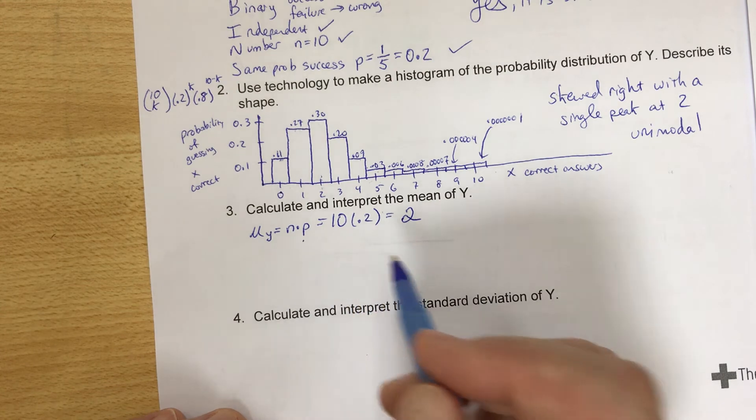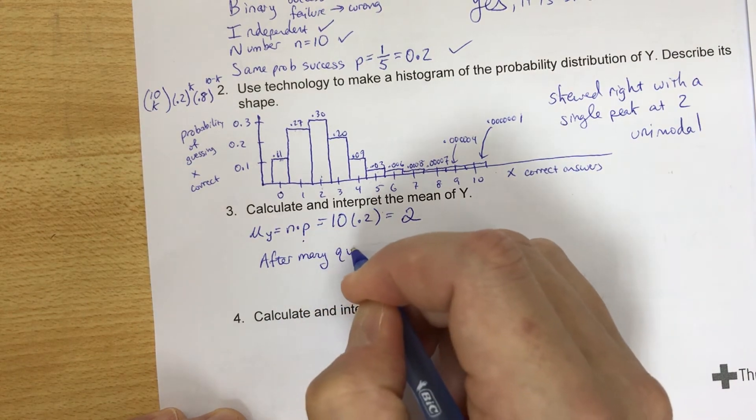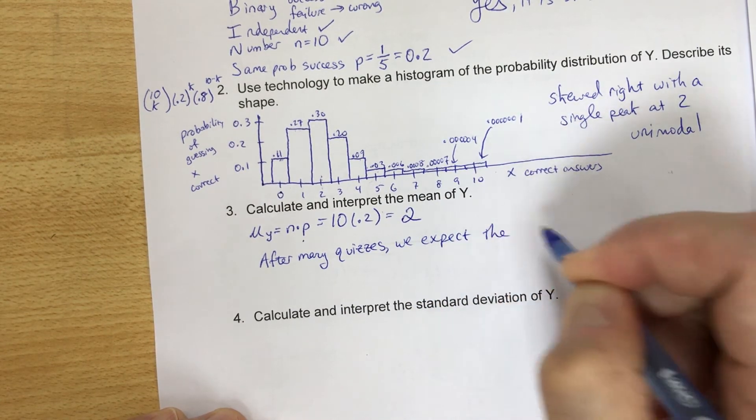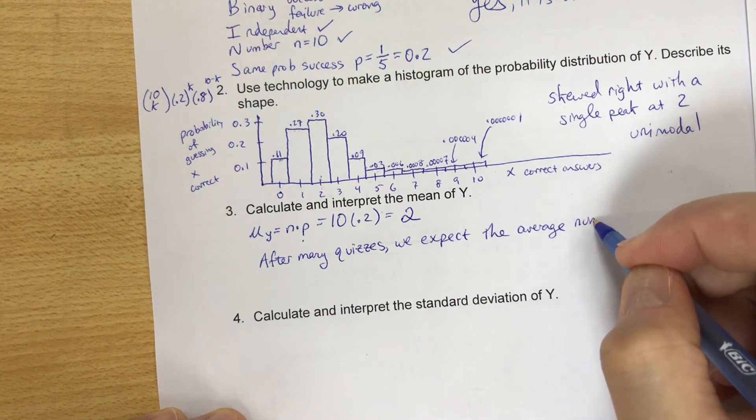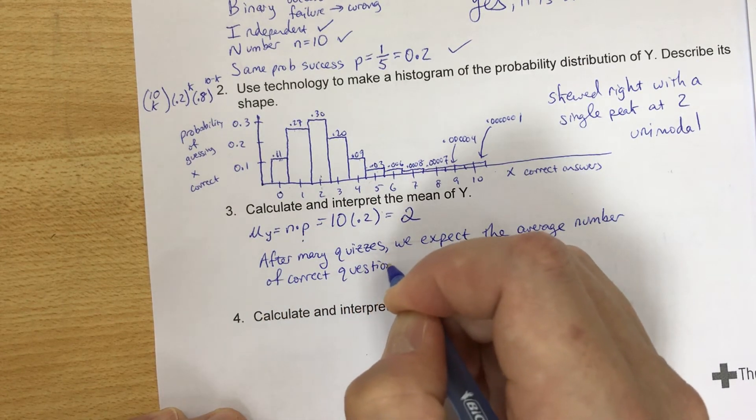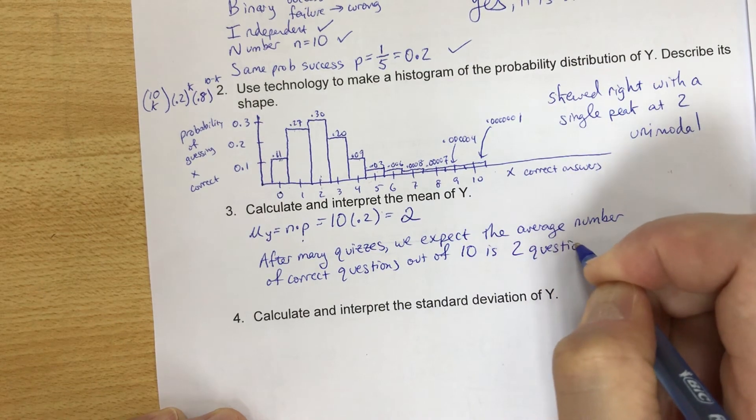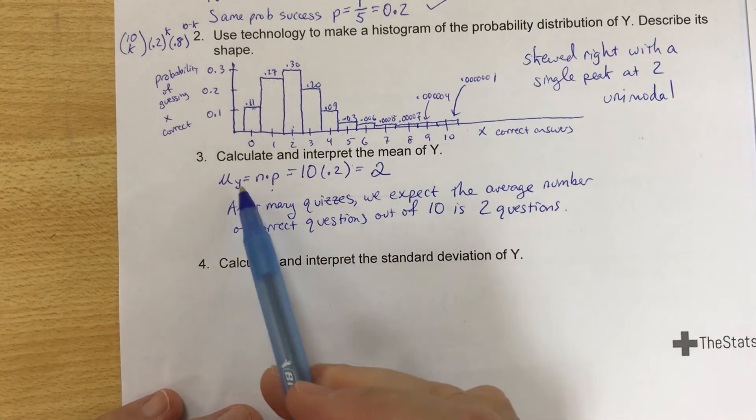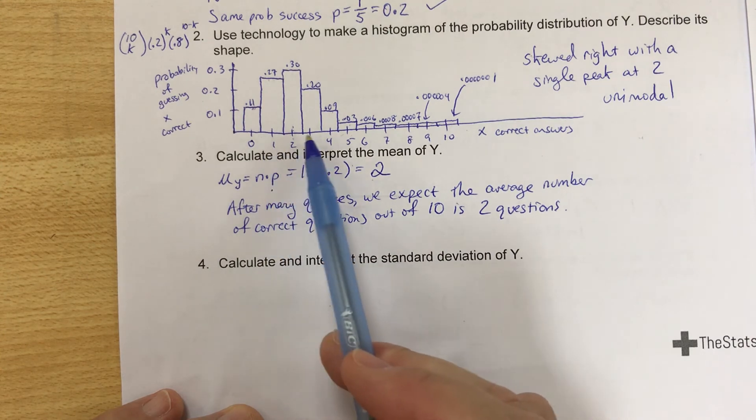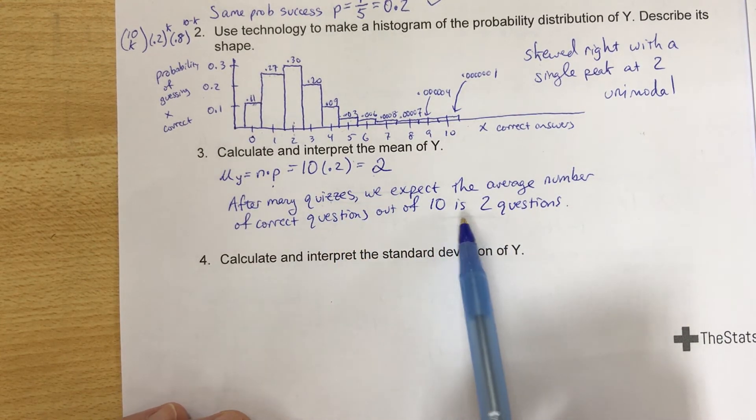So in terms of interpreting this, we would say that after many quizzes, so if we were to repeat this many times, we expect the average number of correct questions out of 10 is 2, is 2 questions. That's the expected value. This is the mean. So after many quizzes, if you did this many times, sometimes you would get less than 2, sometimes you would get more than 2. But on average, in the long run, we would get 2 out of 10 correct. On average.